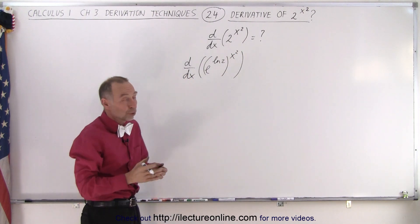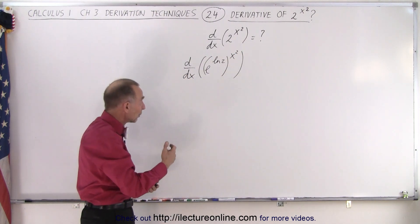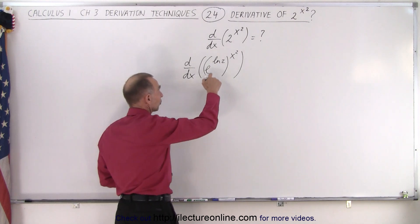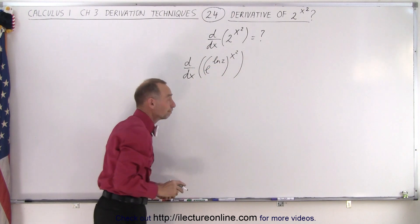Notice that 2 is exactly the same as e raised to the natural log of 2, because the exponential and natural log cancel out. You get 2 again.